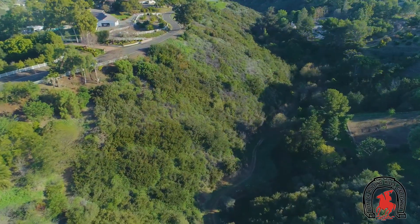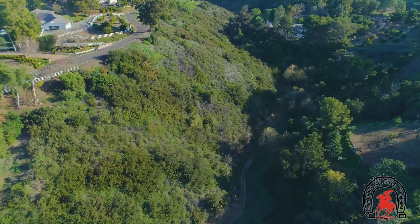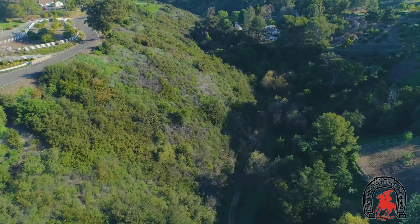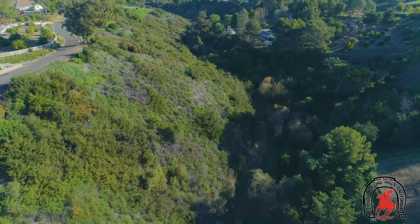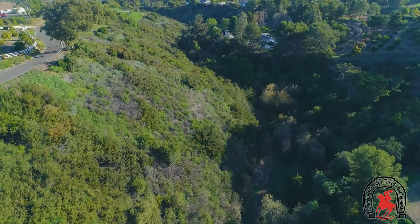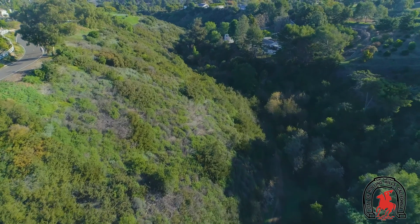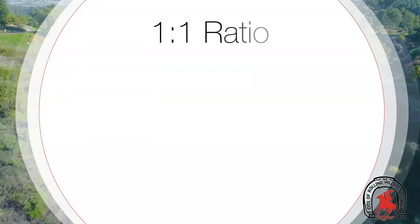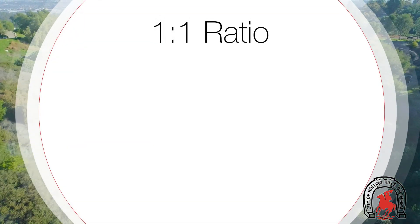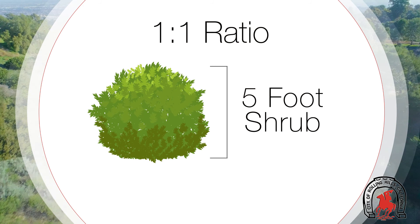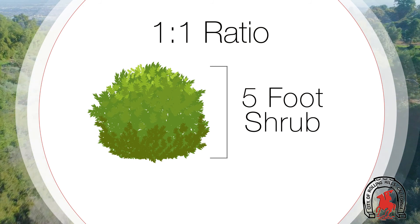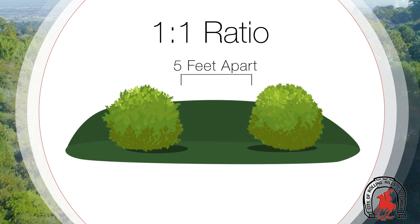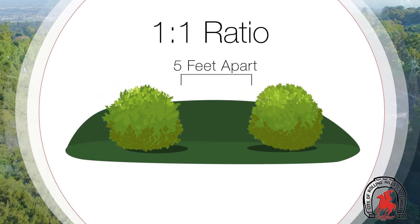The further away vegetation is from structures, such as mid slope and bottom canyon, the more conservative your approach could be. For instance, you could use a one-by-one ratio with a five-foot shrub spaced five feet apart from the next shrub.